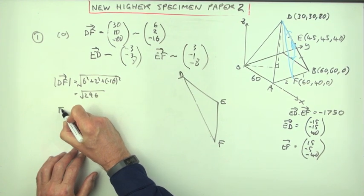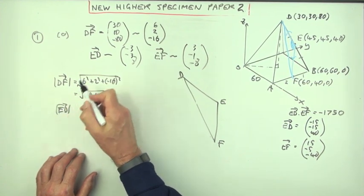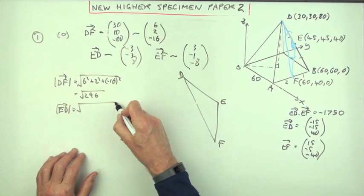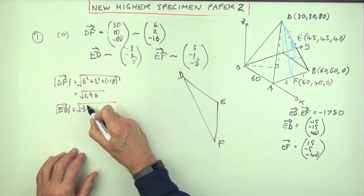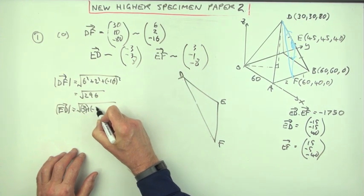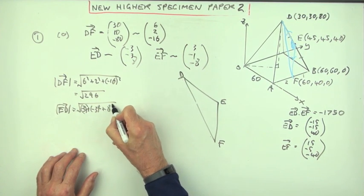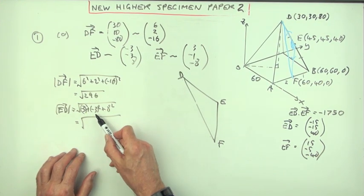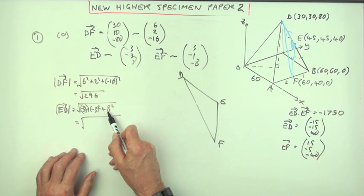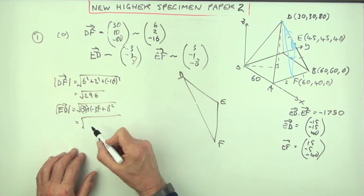What about the length of ED in the scaled down triangle? That would be negative 3. I could just really jump in with the numbers. Negative 3 squared, negative 3 squared, and 8 squared. I can hardly read this myself. So that's 9 and 9 is 18. 18 onto 64 would be 82.